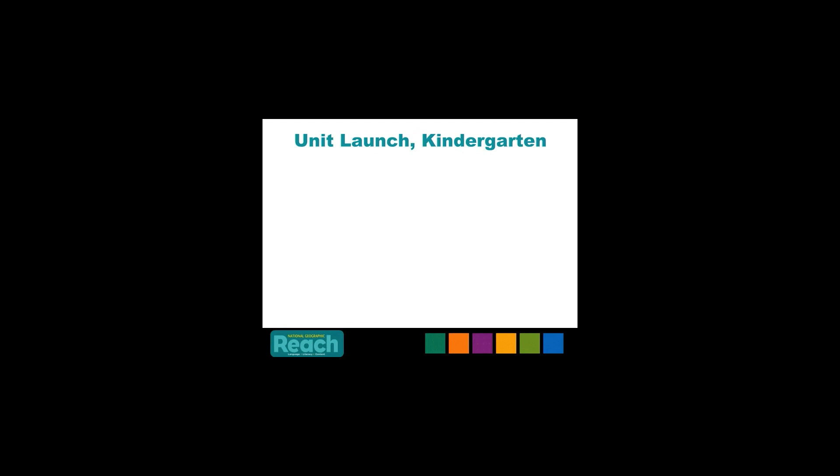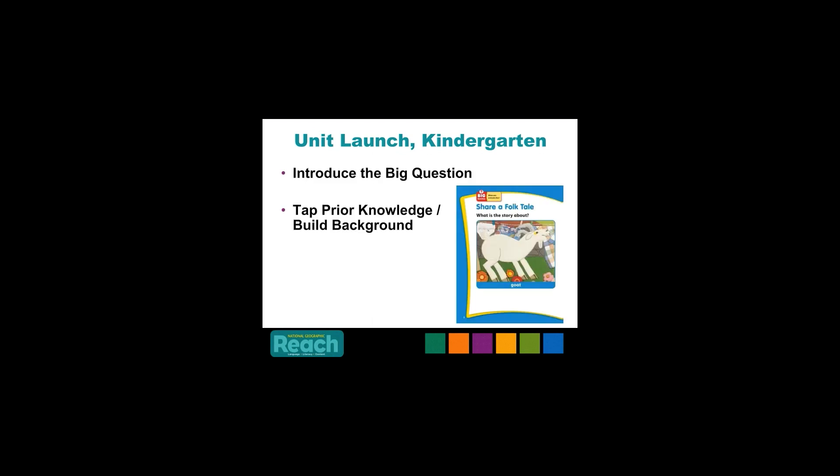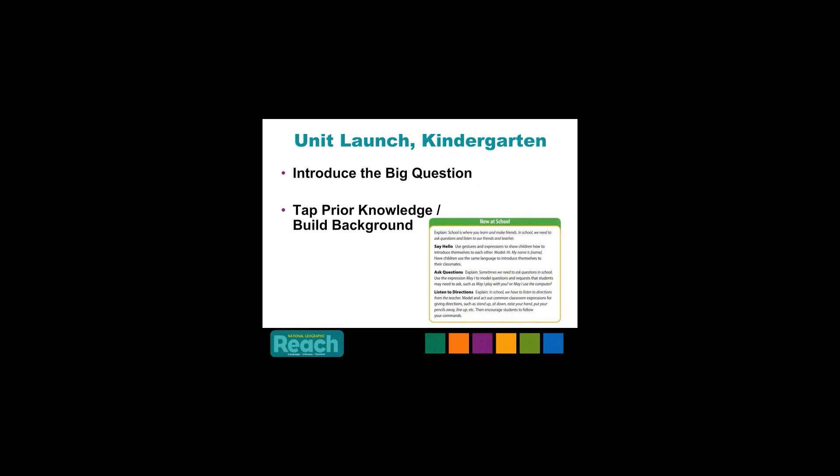The unit launch in kindergarten is very similar to the unit launch in first and second grade, with a few differences. The big book introduces the big question before tapping students' prior knowledge and builds background for the unit concept. The unit launch at the kindergarten level also includes new-at-school instruction that helps develop students' social and interpersonal skills — for example, how to say hello, ask questions, and listen for directions. We will delve into this in more detail in On-Demand Module 4, Teaching Success for Kindergarten.